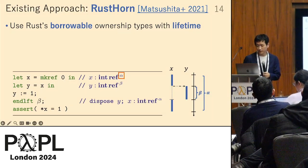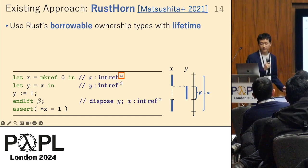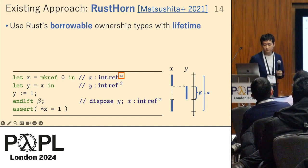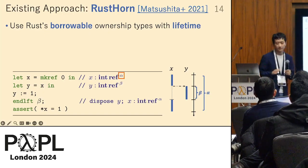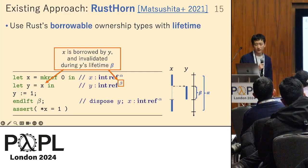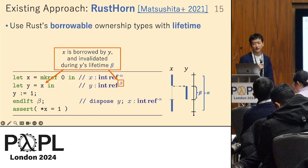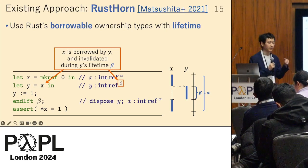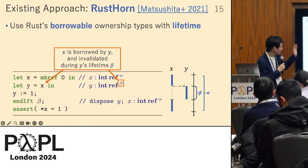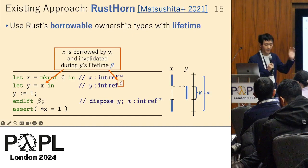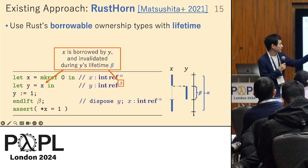The lifetime represents the abstract point at which those references are no longer used. In this example, x has lifetime alpha and y has lifetime beta. The Rust type system has a unique feature called borrowing, which allows the temporary lending of ownership during a certain lifetime. The reference y borrows the ownership of x during its lifetime beta, as shown in the diagram.